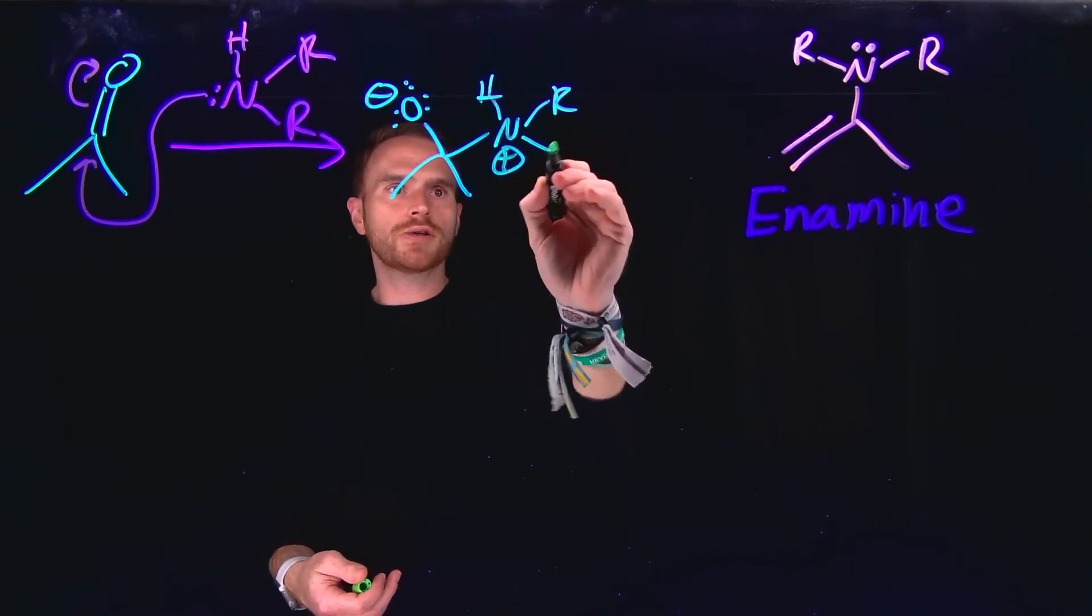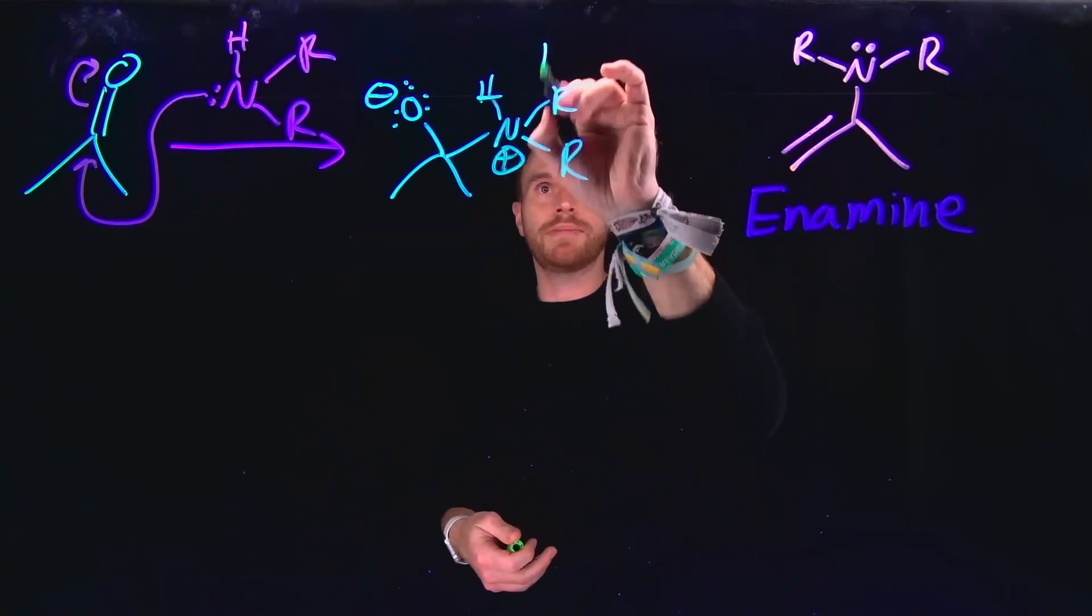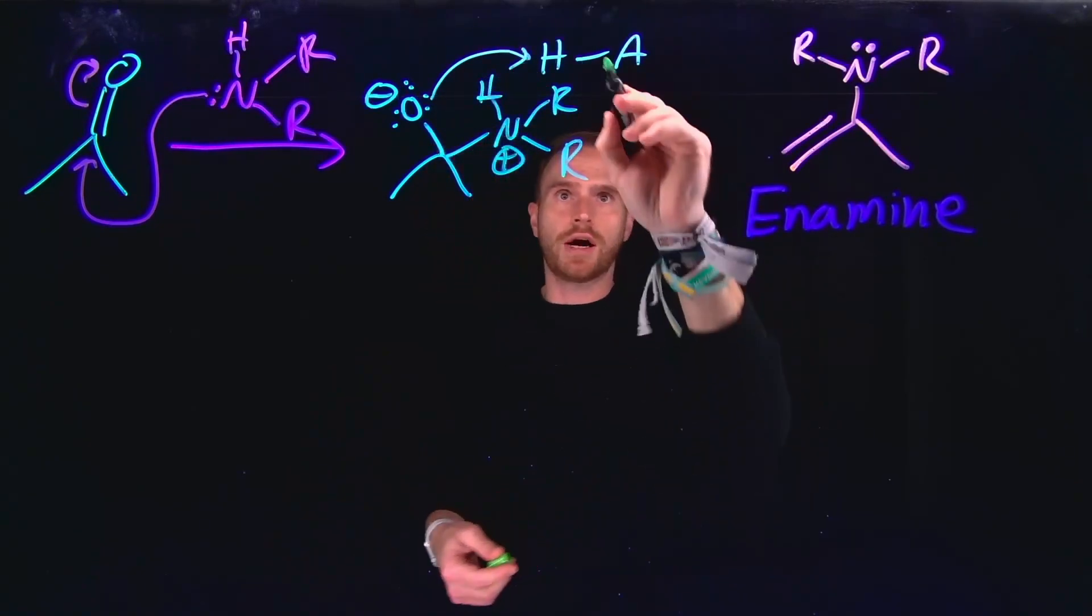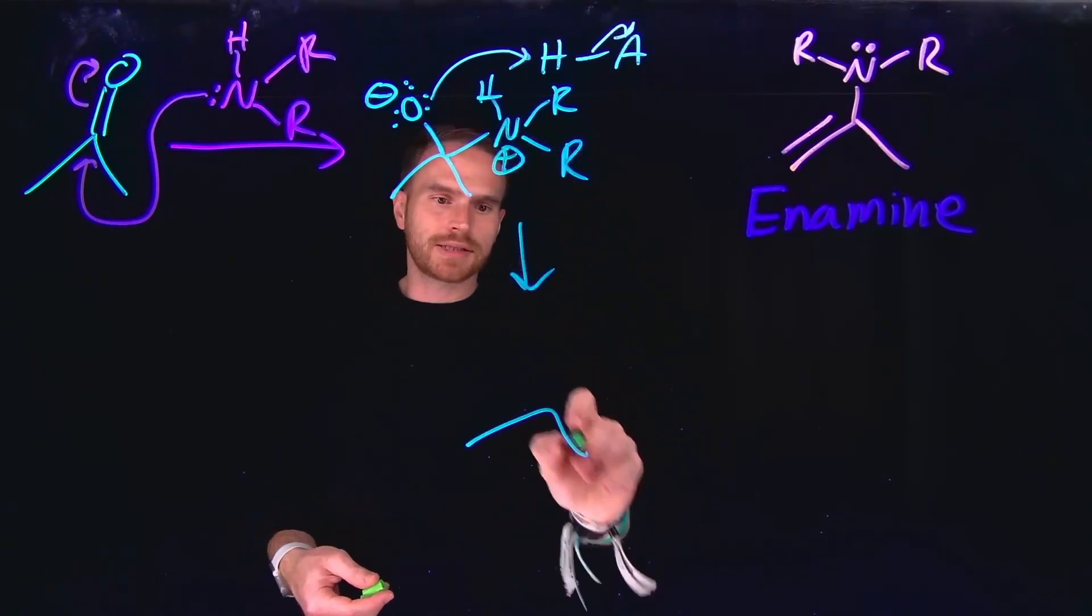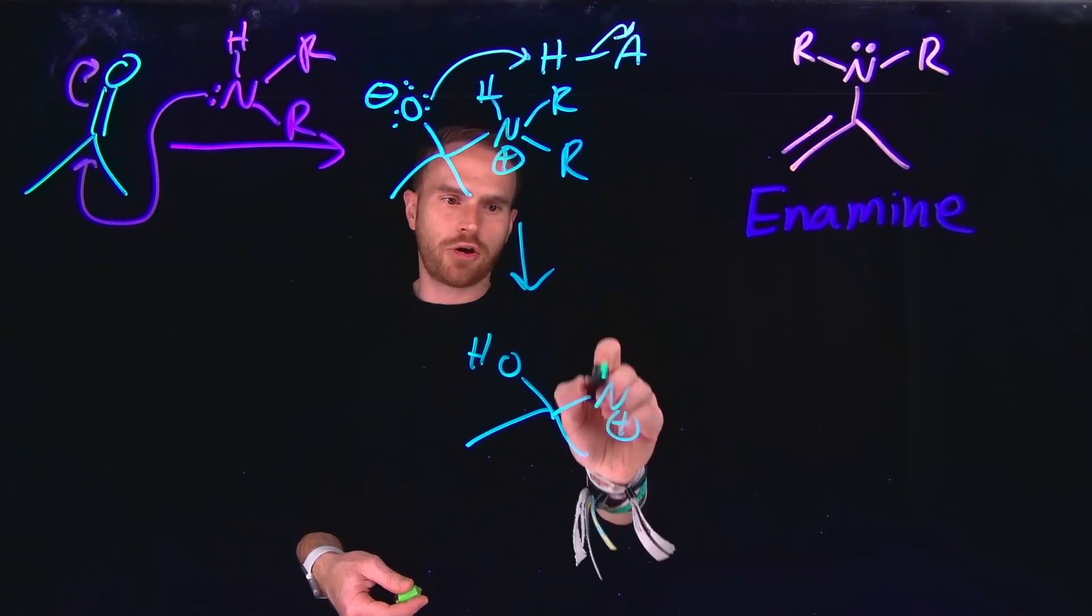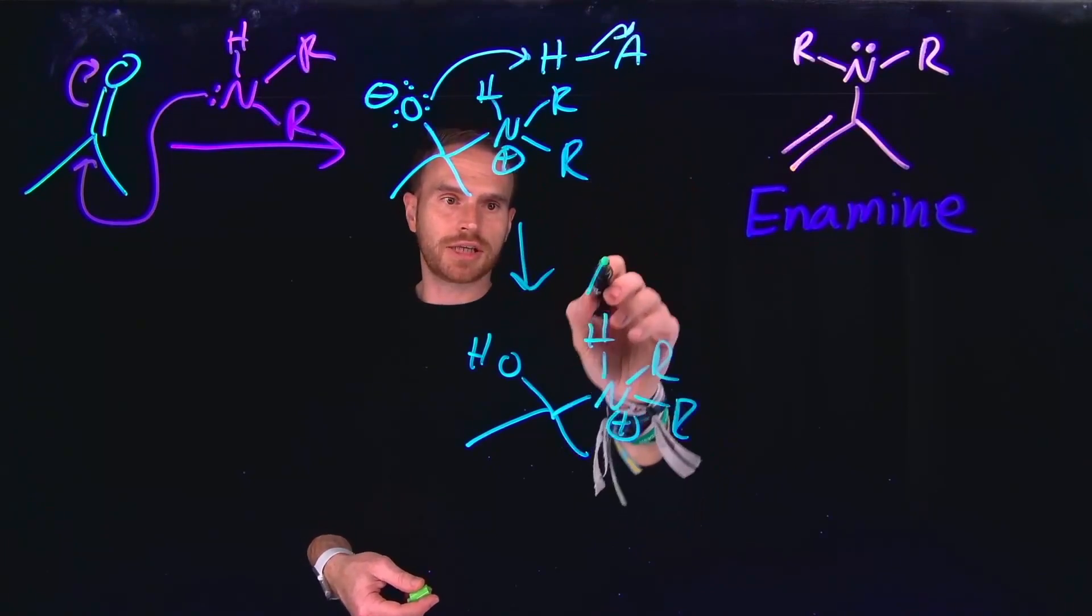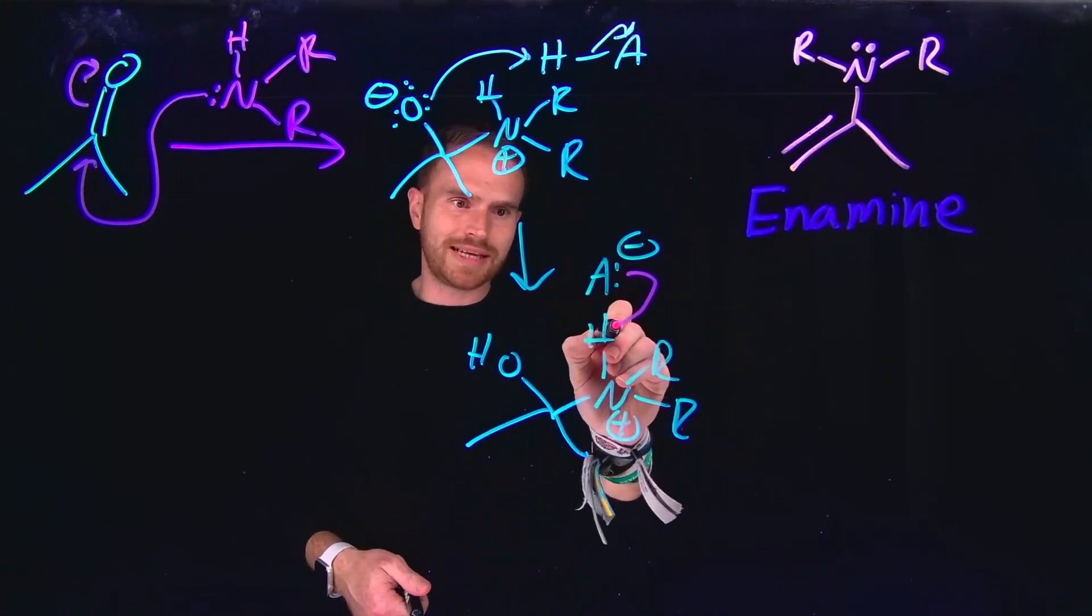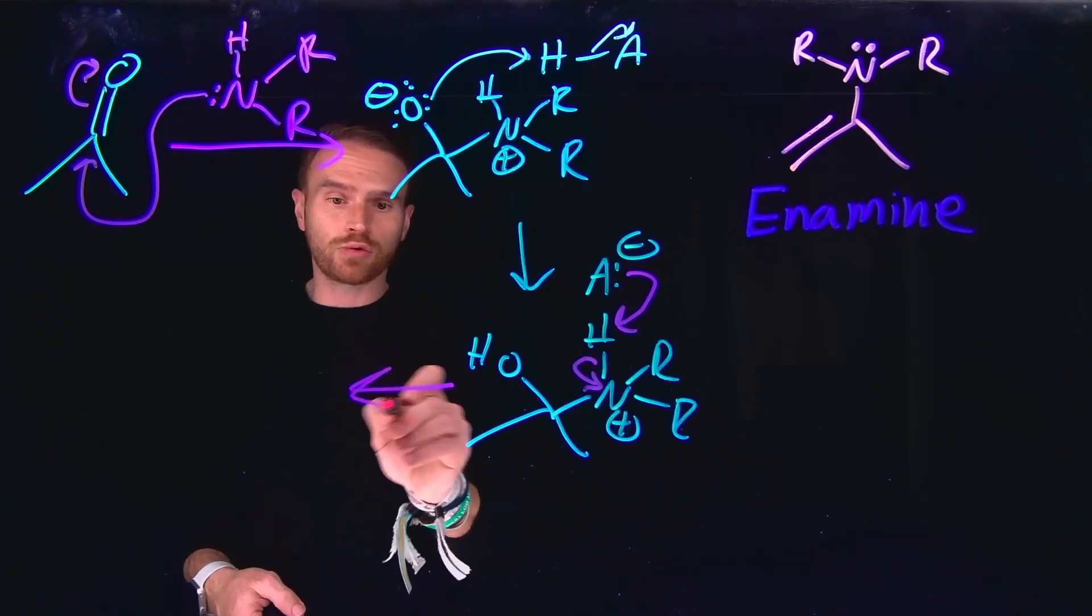And we also still have our acid. So notably, in both of these mechanisms, we need to be under acidic conditions. So remember, the negatively charged oxygen will attack that proton, allowing us to generate the conjugate base. So this creates our newly formed alcohol. And then we're still left with our positively charged nitrogen containing species. But again, we still have this conjugate base. And that conjugate base can do the same as previously, where it will deprotonate that hydrogen, allowing us to place a lone pair on the nitrogen, creating a neutral compound.